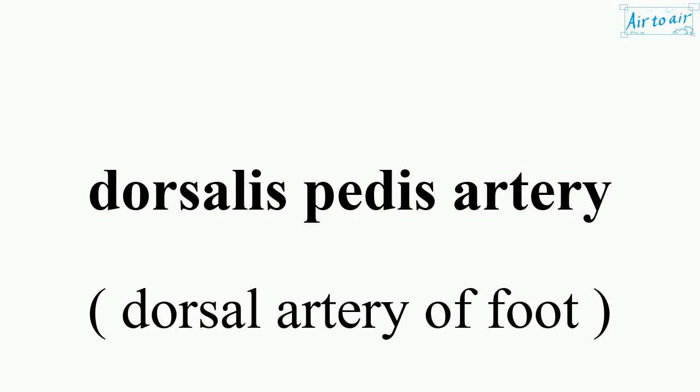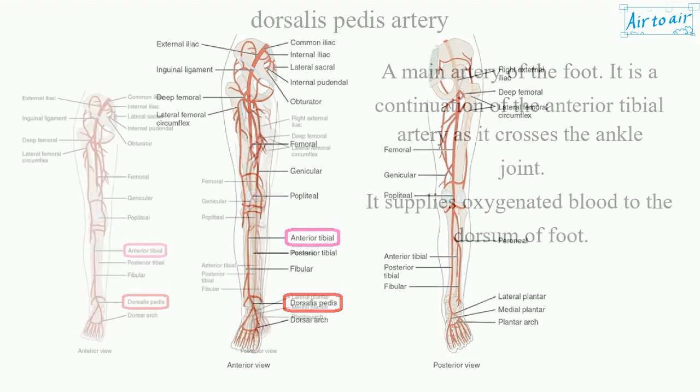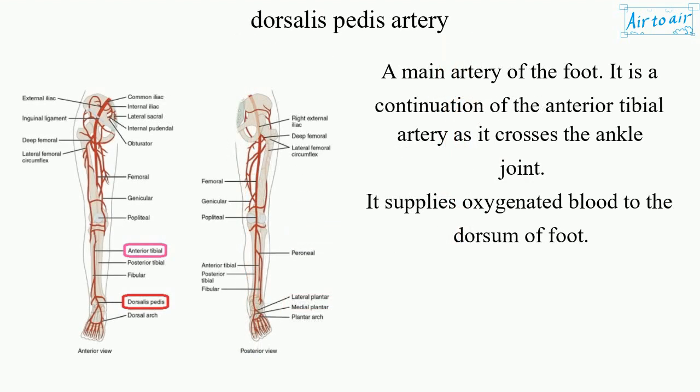Dorsalis pedis artery. A main artery of the foot. It is a continuation of the anterior tibial artery as it crosses the ankle joint. It supplies oxygenated blood to the dorsum of the foot.